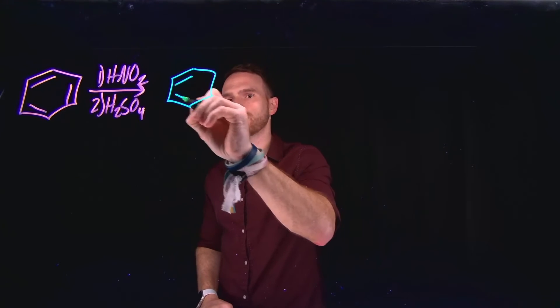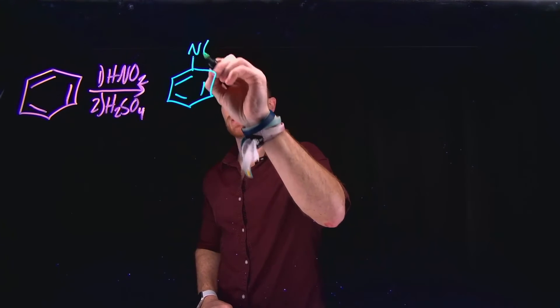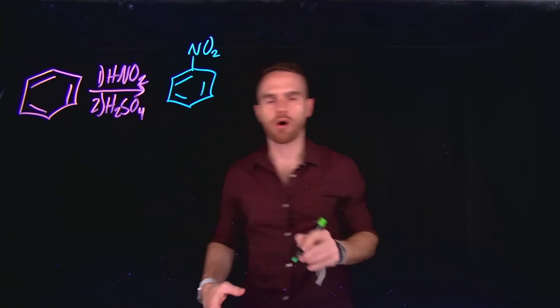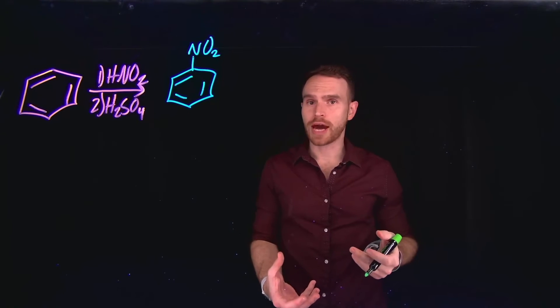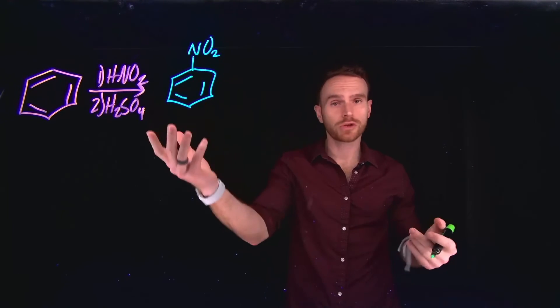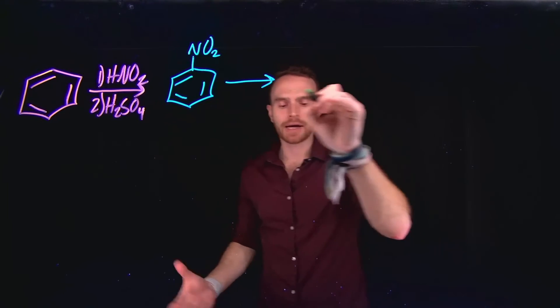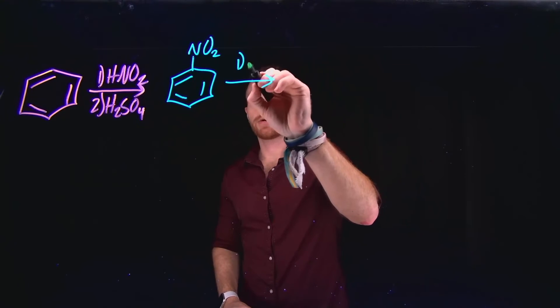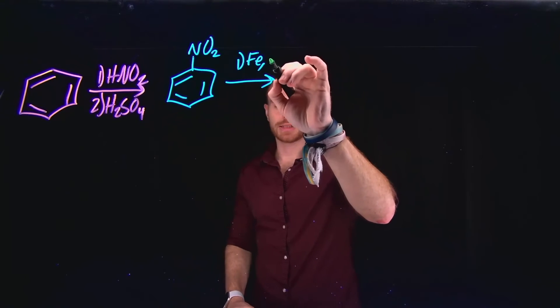So once I have done this, I can place my nitro group at any one of the positions because they're all identical. And from here, one of the reactions that we've learned about is how you can reduce this nitro group by using something like iron in the presence of water